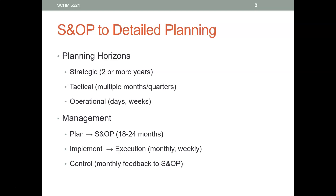Strategic planning looks into two or more years — three, four, five, maybe ten years into the future. Operational plans are typically daily and weekly plans, maybe monthly also. And somewhere in between is tactical planning, which covers multiple months up to multiple quarters, but less than two years.